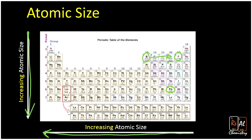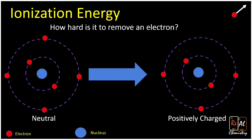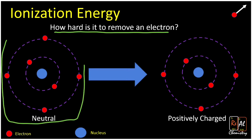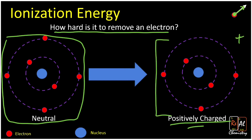Ionization energy is another important property. It tells us how hard it is to remove an electron — specifically, the amount of energy needed to remove an electron. If I imagine a neutral atom with a blue nucleus and six electrons, how much energy does it take to reach a positively charged atom where one electron is removed? That's ionization: I've removed an electron, made it an ion, something with a charge. We can predict how hard that will be, at least relatively speaking, by its position on the periodic table.